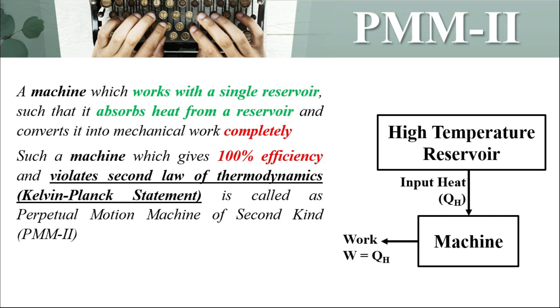This means we are talking about 100% efficiency. Now, as per Kelvin-Planck's statement for the second law of thermodynamics, this is not possible. So if there is a machine which is violating Kelvin-Planck's statement for the second law of thermodynamics, then that kind of machine will be called a perpetual motion machine of second kind.